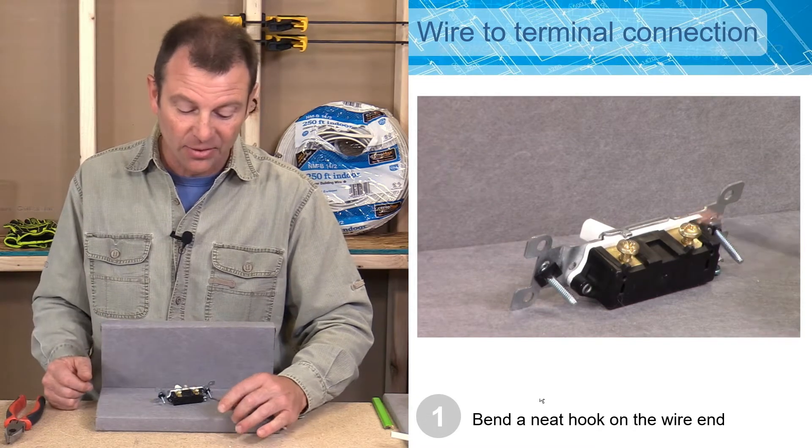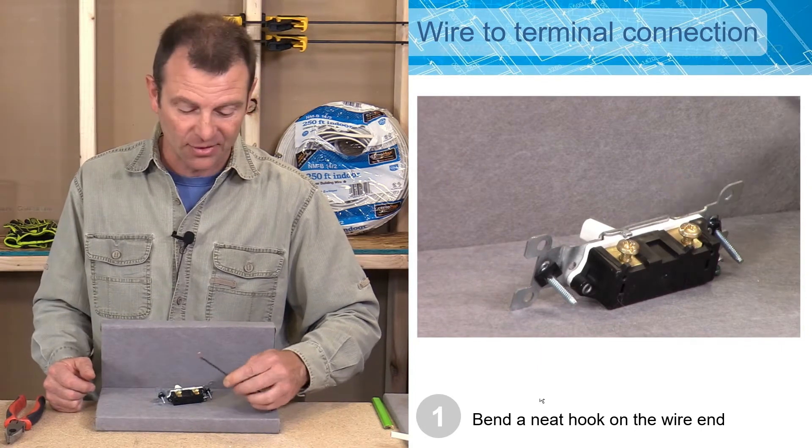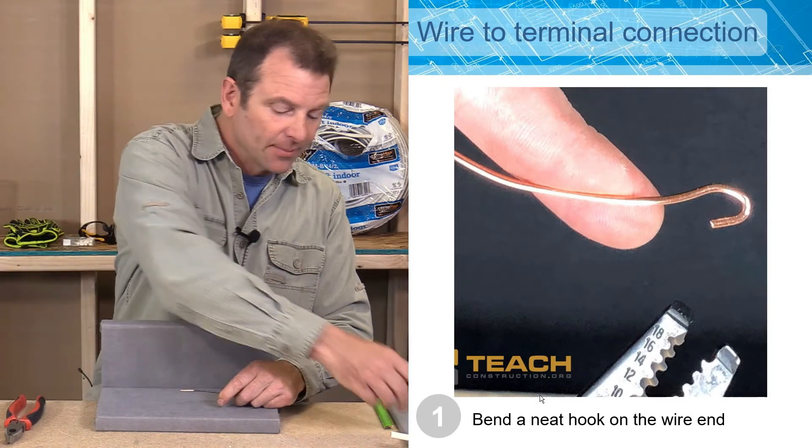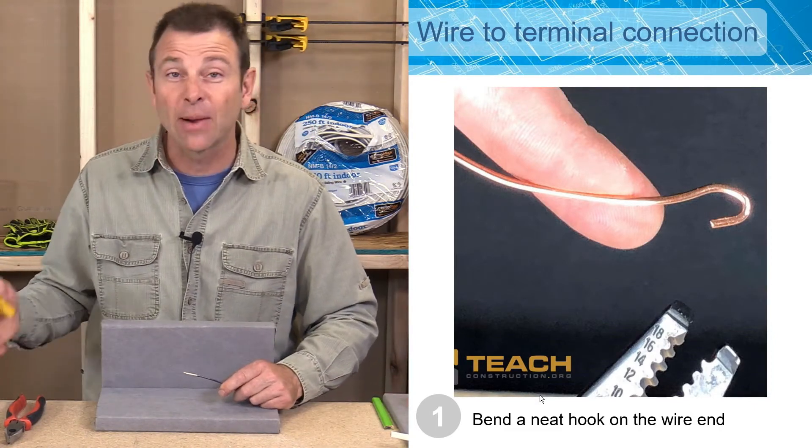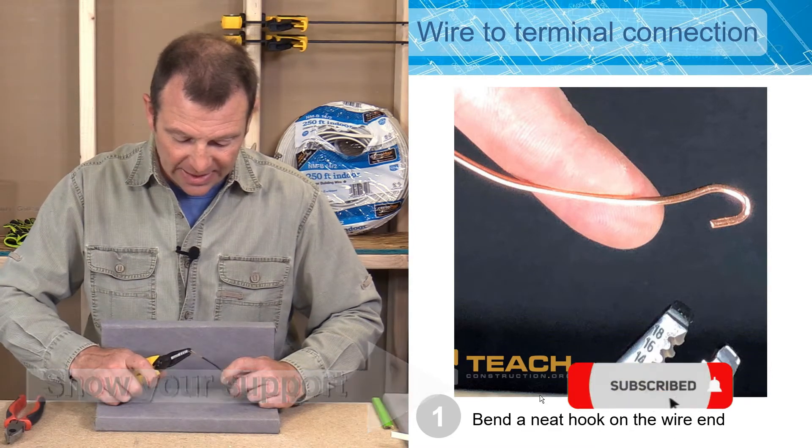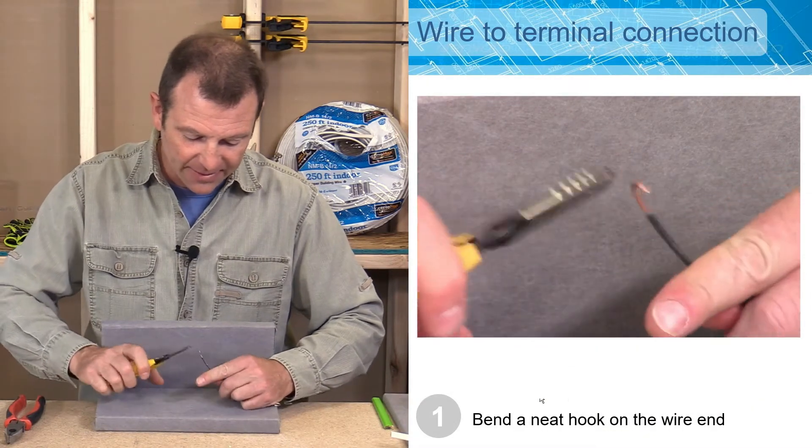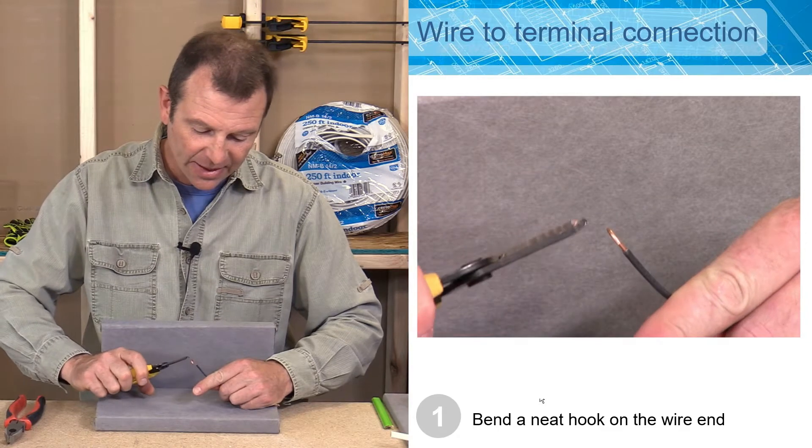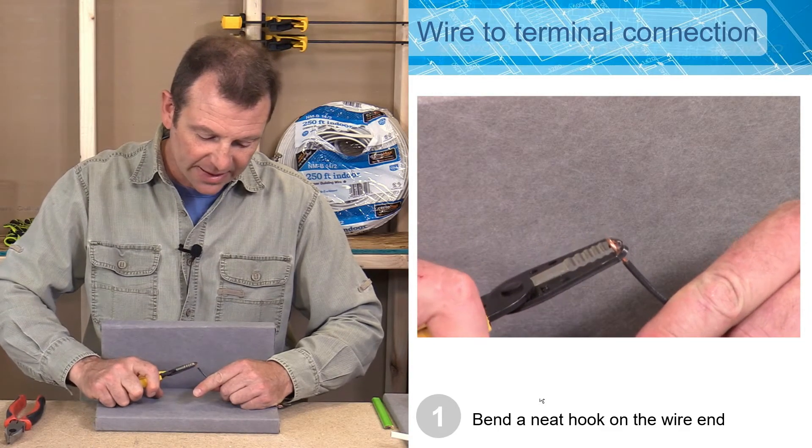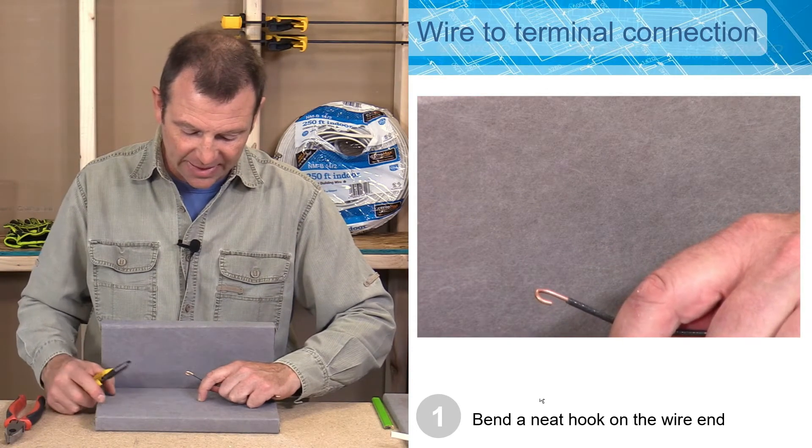The next step we need to do is to make this hook end on the conductor. I'll start with my stripped end that I have here already. I'm going to bend using my wire cutters. I'm going to bend this end into a hook. So I'll use these tips that I talked about and I'm basically going to bend it and then as I have it bent in the direction that I want it to go, I'm then going to squeeze it into more of a hook. There you see it. It's almost ready to go.